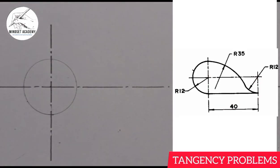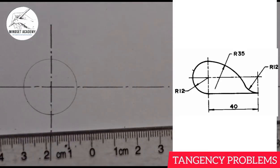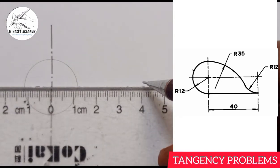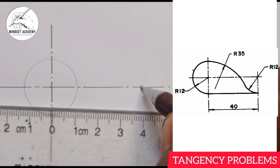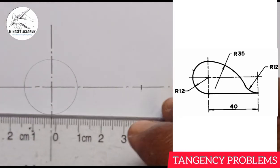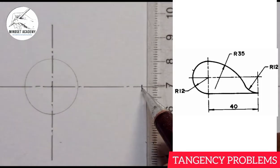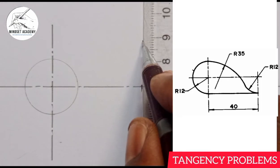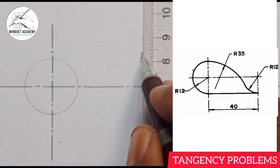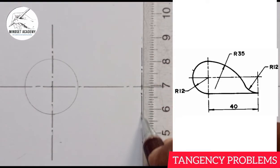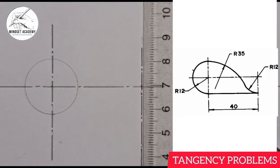So I'm going to measure 40 from the center — from zero to four, it's 40. Then I'll draw my center line across that point, using the long-short-long pattern.